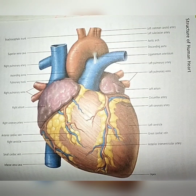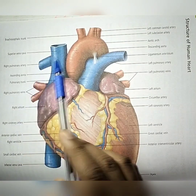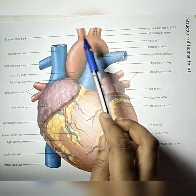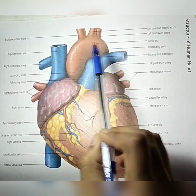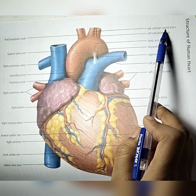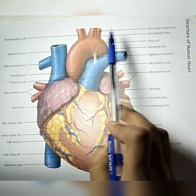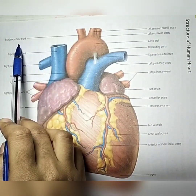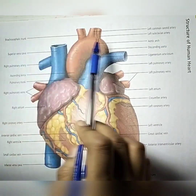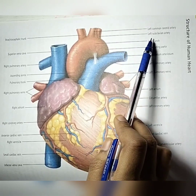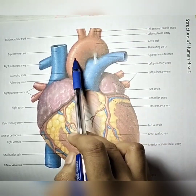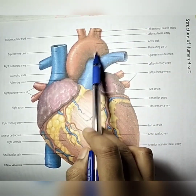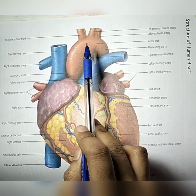Hello everyone, today we are going to discuss the structure of our heart. We can see that this is the aorta. In this aorta, this is the left common carotid artery, this is the brachiocephalic trunk, and this is the left subclavian artery. The aorta carries oxygenated blood.